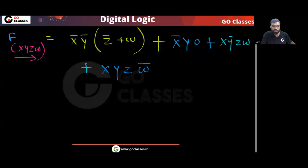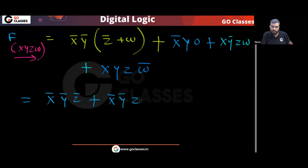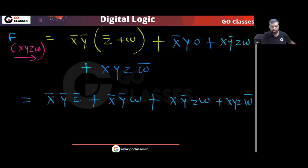So finally the function f we obtained is: f = X̄ȲZ̄ + X̄ȲW + XȲ·ZW + XY·ZW̄. This is the complete Boolean expression derived from the multiplexer connections.